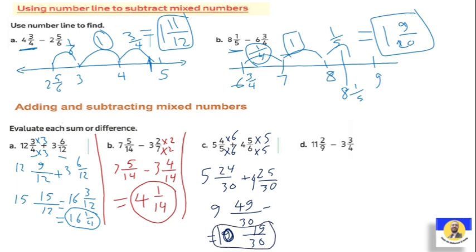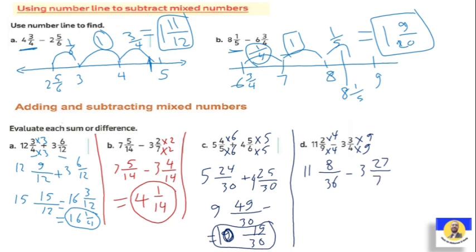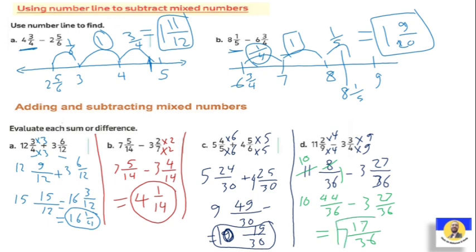Next: eleven and two over nine minus three and three quarters. Using LCM: multiply by four up and down and nine up and down, giving eleven and eight over thirty-six minus three and twenty-seven over thirty-six. Since eight is less than twenty-seven, we regroup: ten and thirty-six plus eight equals ten and forty-four over thirty-six minus three and twenty-seven over thirty-six. The answer is seven and seventeen over thirty-six.